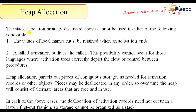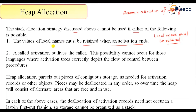Stack allocation strategy cannot be used in either of the following cases. First, it is possible that the value of local names must be retained when an activation ends. When activation ends, the value of local variables must be retained — that is not possible with stack because that area is deallocated. So we can use int* p and say malloc with the size of int to hold that value.